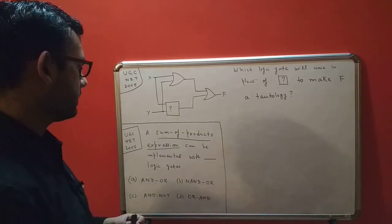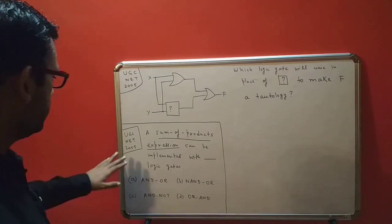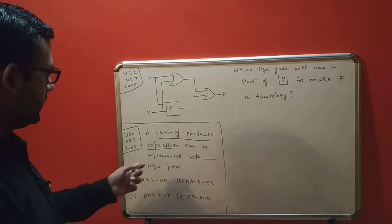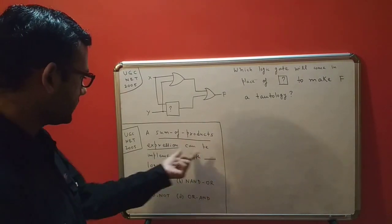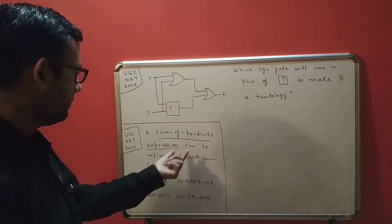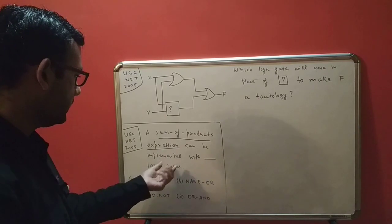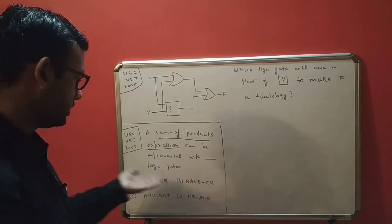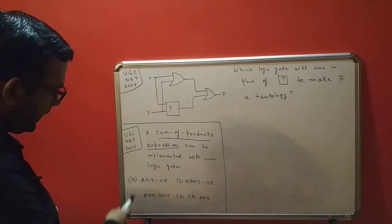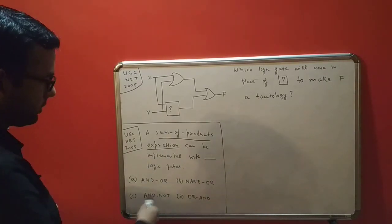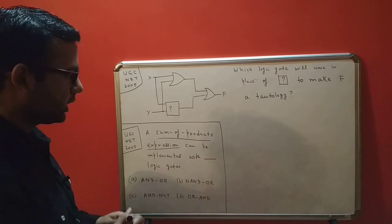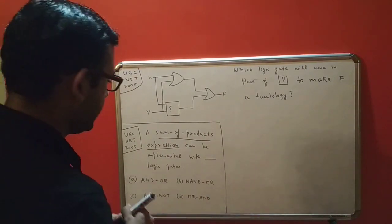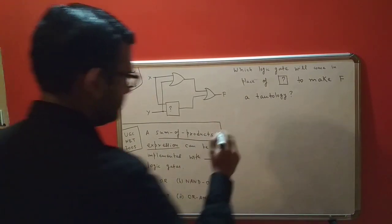Let's solve these two questions. Starting with the first one: it has been mentioned that a sum of products expression can be implemented with blank logic gates, and we have been given four options. What is the sum of products expression? Let's take an example.